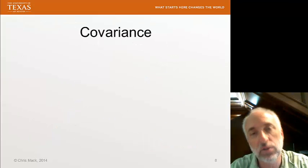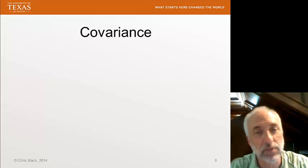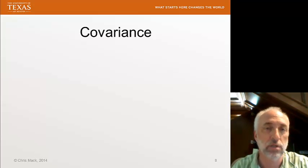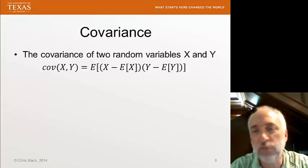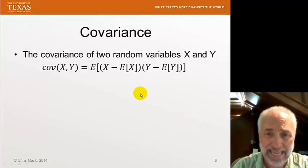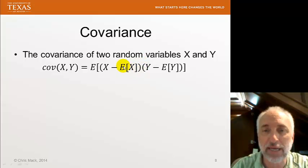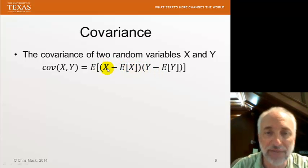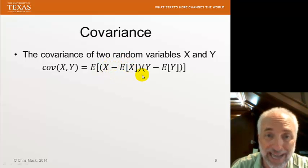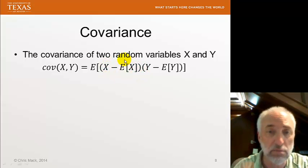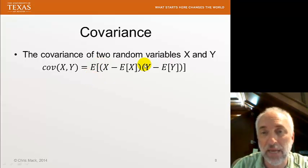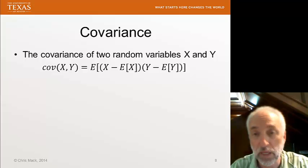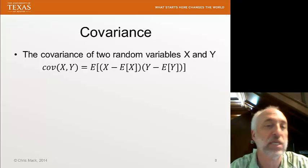A related concept to the correlation coefficient, and in some sense a preliminary concept that we haven't talked about yet, is the covariance. So let me define covariance, and then I'll show you how it relates to the correlation coefficient. If I have two random variables, X and Y, the covariance of X and Y is the expectation of the product of the mean offset value of X. So if I take the random variable X, and I subtract off its expectation value, I now have a value of X that's been shifted so that its mean is zero. And then I take that and multiply it by the same thing with Y, the Y random variable subtracting off the expectation of Y. Multiply those two together, get the expectation of that, I have the covariance of X and Y.